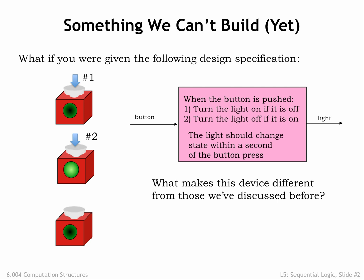What makes this circuit different from the combinational circuits we've discussed so far? The biggest difference is that the device's output is not a function of the device's current input value. The behavior when the button is pushed depends on what has happened in the past. Odd-numbered pushes turn the light on; even-numbered pushes turn the light off.